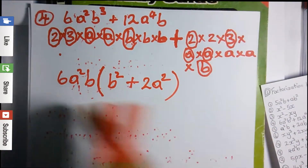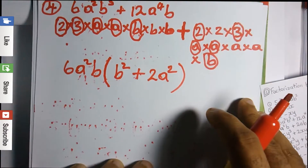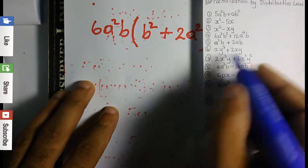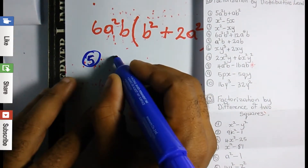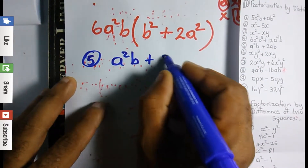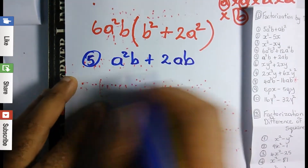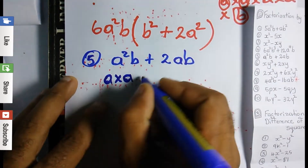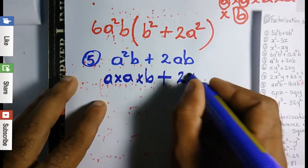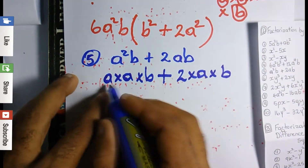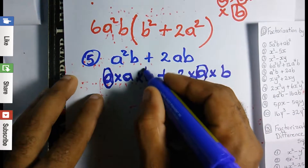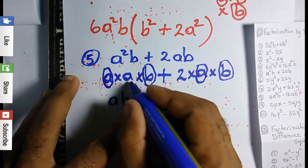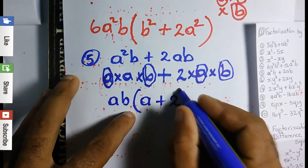Continuing with factorization by distributive law — Question 5: we have a²b + 2ab. Expanding: a squared is a times a times b, plus 2 times a times b. Looking at both sides, a and b are both common, so ab is the common factor. Open a bracket: what's left is a plus 2. The answer is ab(a + 2).